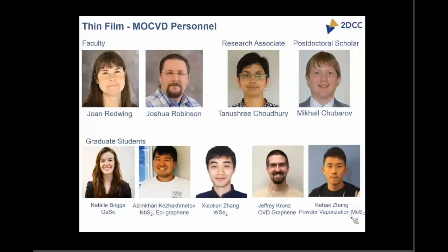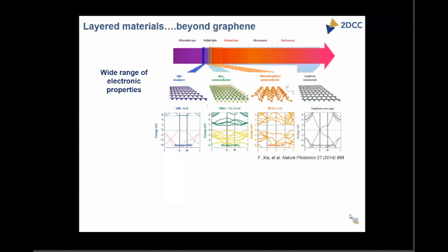Why are we talking about these materials? Graphene started it all — a layered material with amazing mobilities that is chemically inert. What graphene did was also divert attention towards the whole class of layered materials, where you have different kinds of properties. You can have insulators like HBN, semi-metals, and superconductors. All of these are layered in their structure.